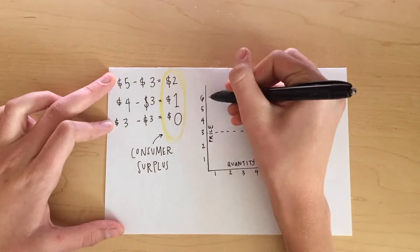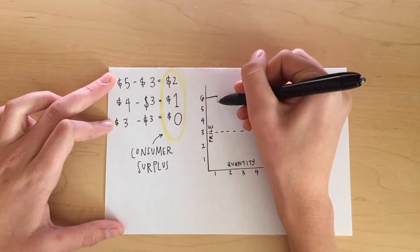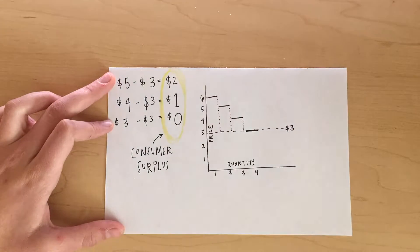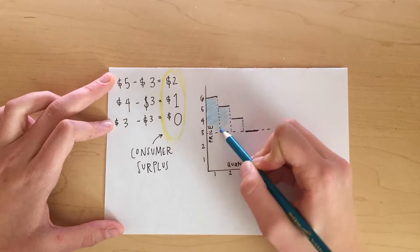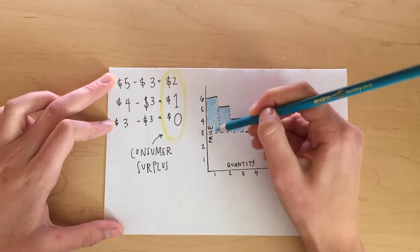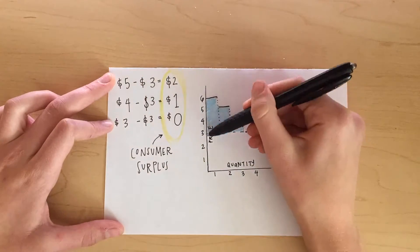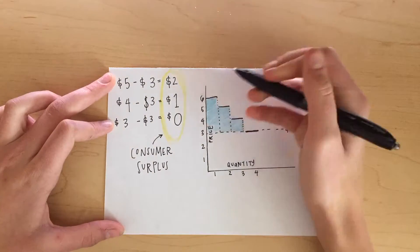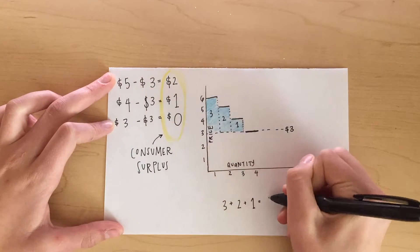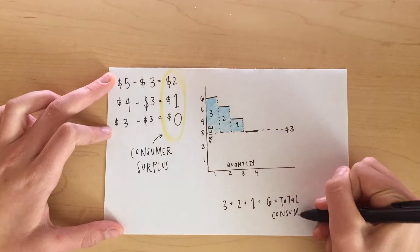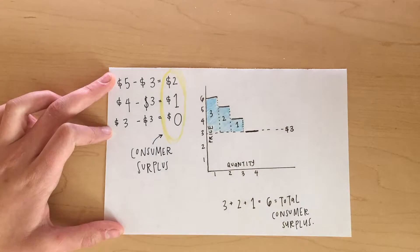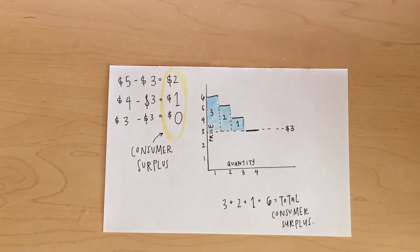On a graph, we see this in the area between what I was willing to pay and the actual cost. So above the line of the actual price of $3 and what I was willing to pay, you add up the area of the shaded region and you get the total consumer surplus — in this case $6.